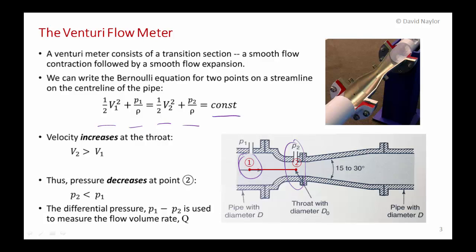Because of continuity and conservation of mass, when you reduce the diameter of the pipe the velocity increases, so the velocity at point two is greater than at point one. The kinetic energy in the flow goes up, and since kinetic energy plus pressure energy must equal a constant, the pressure has to decrease. So the pressure at two is actually lower than at one, and it's this differential pressure that we can use to measure the volume flow rate.